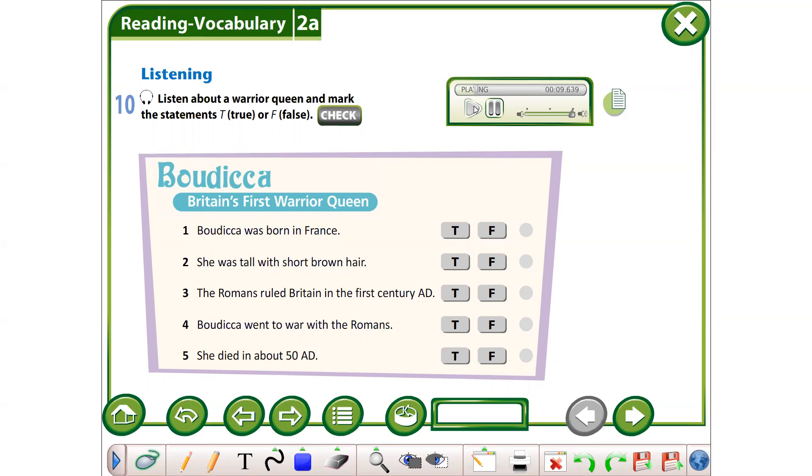Boudicca, Britain's first warrior queen. Boudicca was born in the first century AD in Britain. She was very tall, with long red hair. She was also a clever and brave woman.